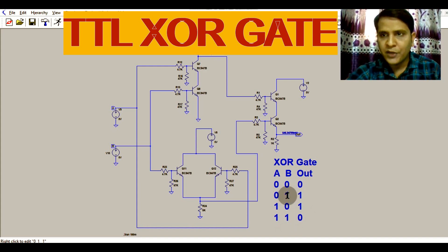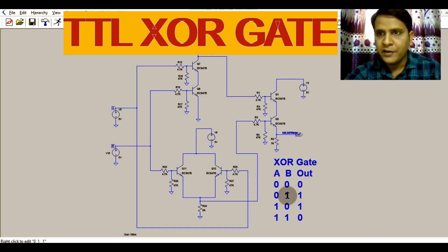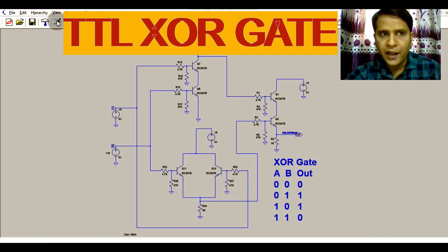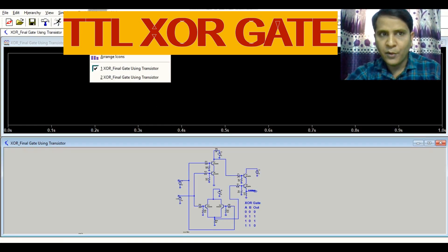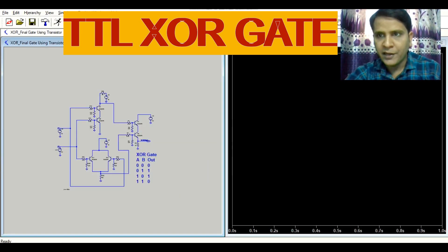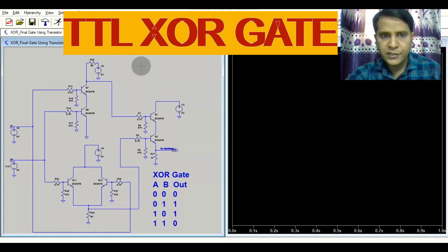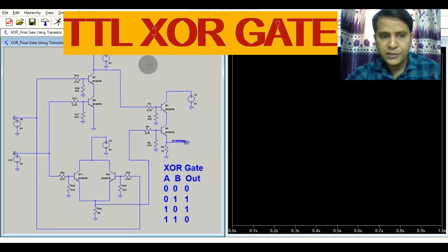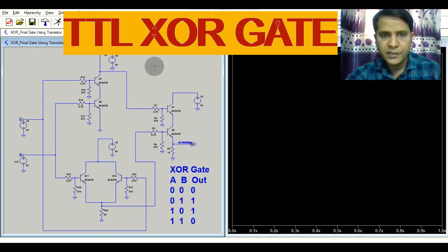Now I will run the simulation and show you the operation of XOR gate by using transistor. Go to Simulate, go to Window, then Tile Vertically. Just zoom in to have proper visibility.